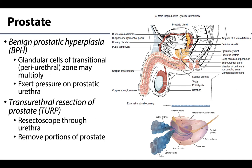Around middle age the prostate is prone to enlarge in certain regions, which is very common and typically benign. This is referred to as benign prostatic hyperplasia, or BPH — hyperplasia being the more correct term. This specifically occurs in glandular cells of the transitional or periurethral zone, where cells multiply, increasing the size of that region. Enlargement of the prostate can exert pressure on or distort the shape of the prostatic urethra, affecting the flow of urine and potentially causing pain.